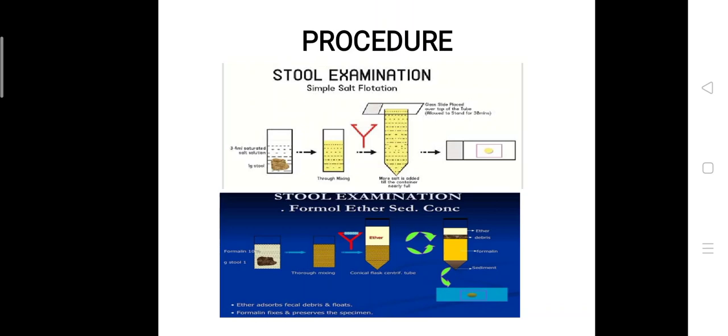Different solutions with different specific gravity are needed to float the egg of different kinds of parasites. The egg may distort if it is kept in a floating solution for a long time.